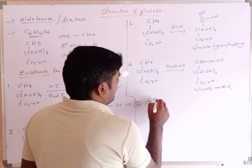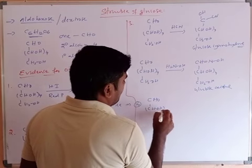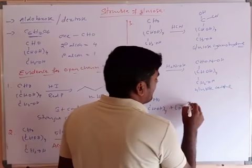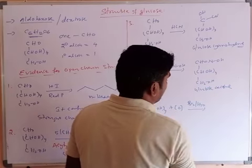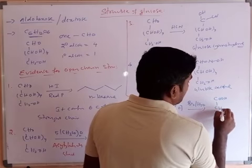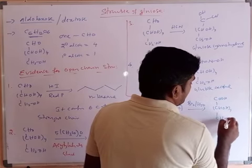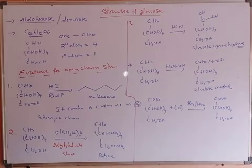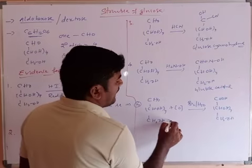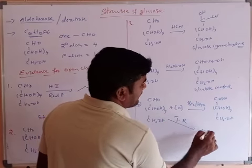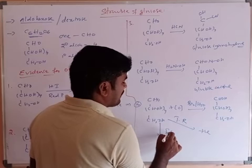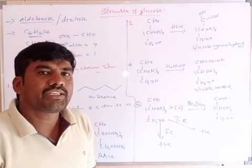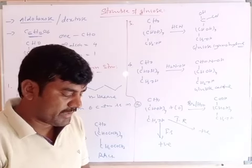The oxidation reaction provides further evidence. Glucose is oxidized by a mild oxidizing agent — bromine water (Br2 water) — to form gluconic acid, where the CHO group is converted to COOH. This confirms the presence of one carbonyl carbon. Additionally, glucose gives a positive test with Tollens' reagent and Fehling's solution, further confirming the presence of the aldehyde group in the open chain structure.